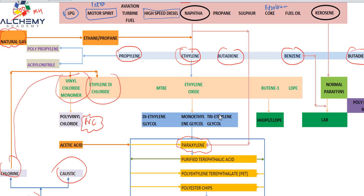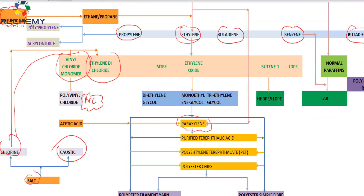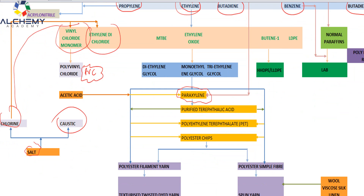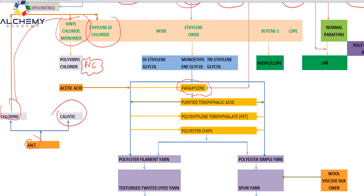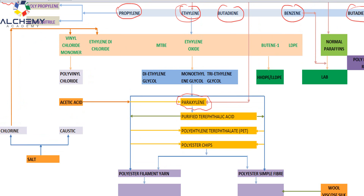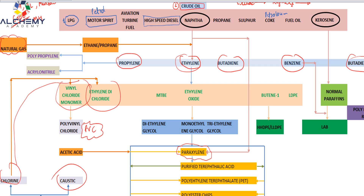From ethylene oxide we derive three products: diethylene glycol, monoethylene glycol, and triethylene glycol. From monoethylene glycol we generate different products — you can see from monoethylene glycol we get polyester filament yarn or polyester staple fiber, which I will come to when discussing the textile industry.